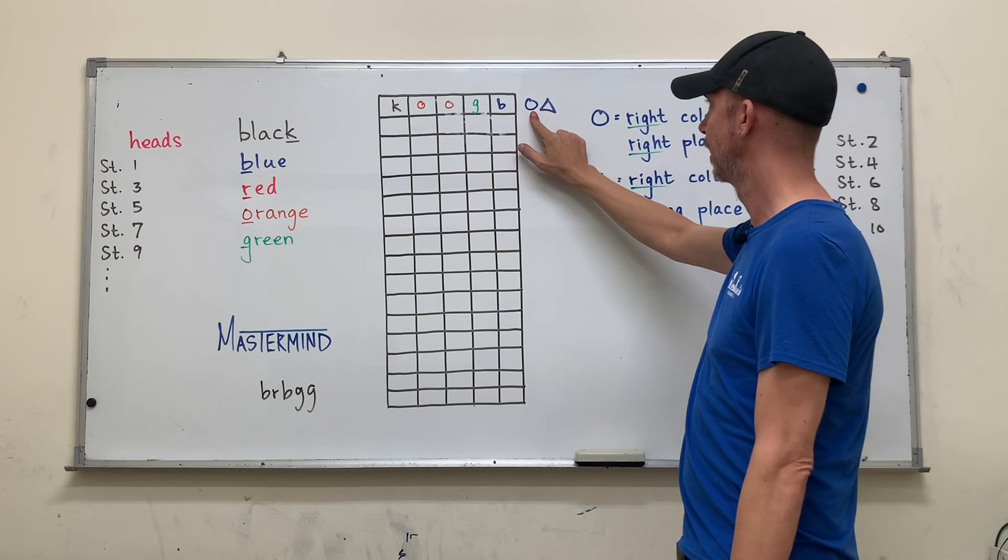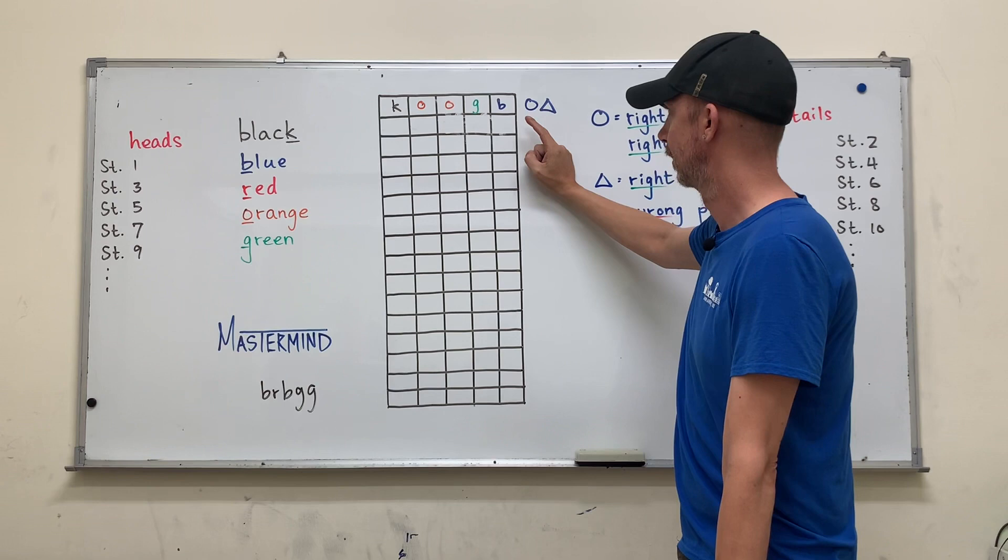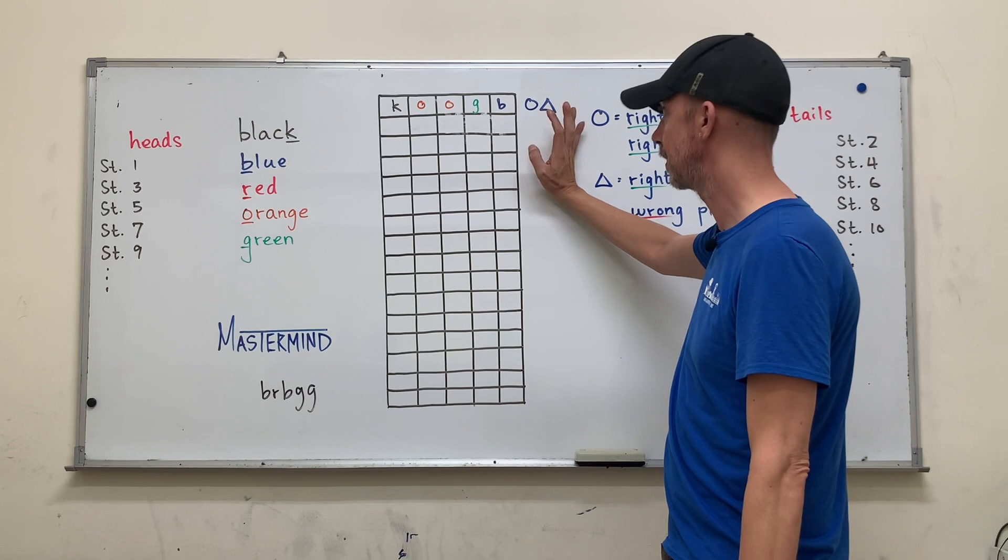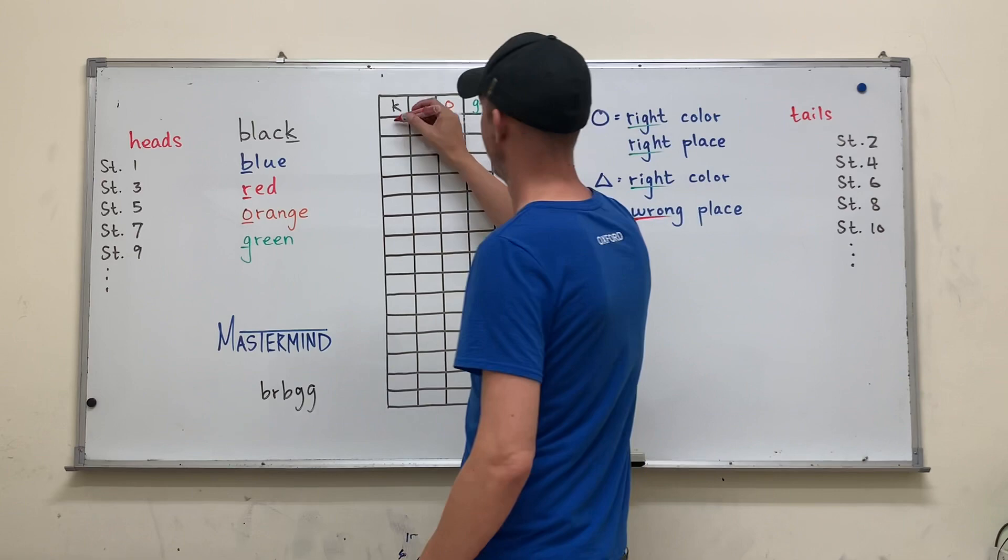Now they wouldn't be able to deduce that just on this information. They would be able to know that only one or two of these colors are in the real answer. So maybe the second person, if the second person were like logically flawless, they would probably guess some red in here just to see how many red are there. Maybe he says red, red, red, red, red.